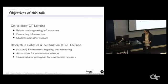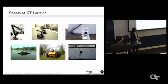What I want to do here is let you know what's there at GT Lorraine, because one of the side effects is to see if some of you want to go and spend some time over there. I want to show you some of the hardware we have, infrastructure, people, and then spend time on the research I'm doing. A lot on natural environment mapping, some on automation for environment science, and a bit on robotics.